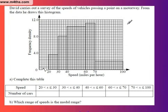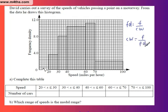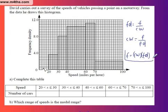What we remember is that frequency density is given as frequency divided by class width. Rearranging, class width is frequency over frequency density. And frequency is class width multiplied by frequency density — so frequency equals Cw times Fd.